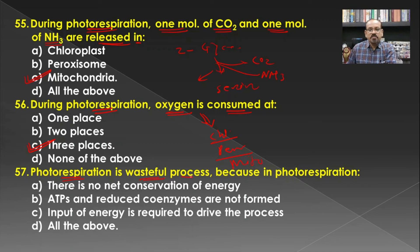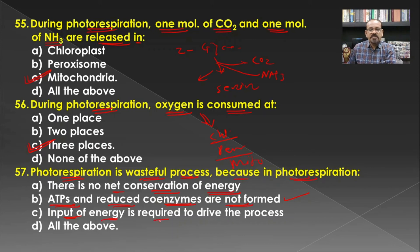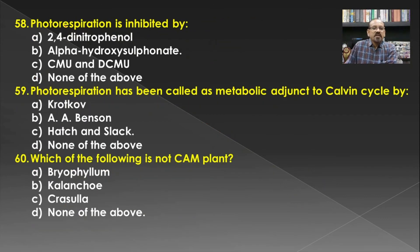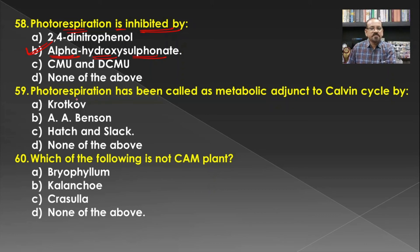Photorespiration is a wasteful process because there is no net conservation of energy, ATP and reduced coenzyme NADPH are not formed, and input of energy is required to drive the process. Hence all of the above become the answer. Photorespiration is inhibited by alpha-hydroxysulfonate, and B is the correct answer. The photorespiration has been called a metabolic adjunct of the Calvin cycle, and this concept was given by Hatch and Slack. Hence C is the correct answer.